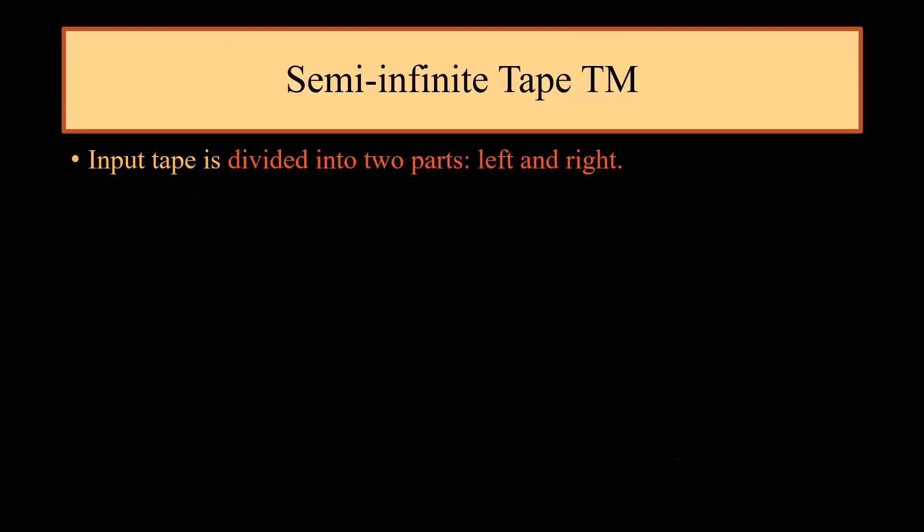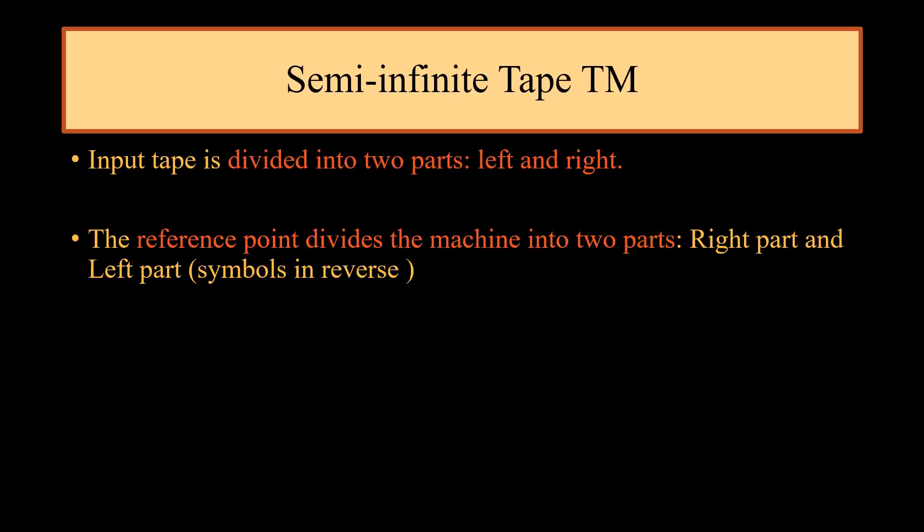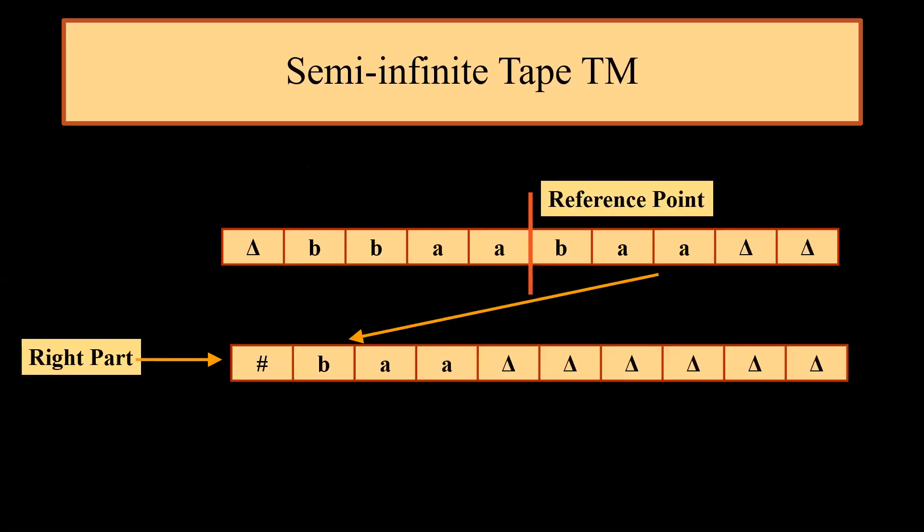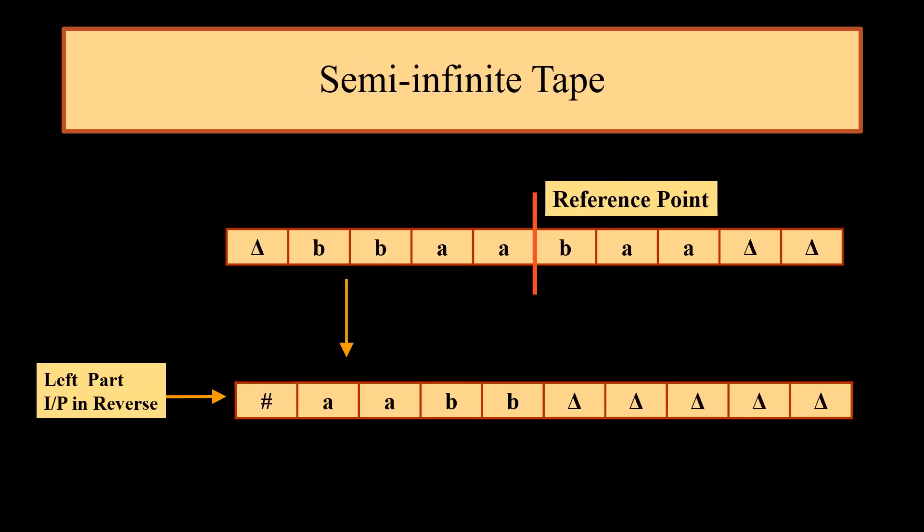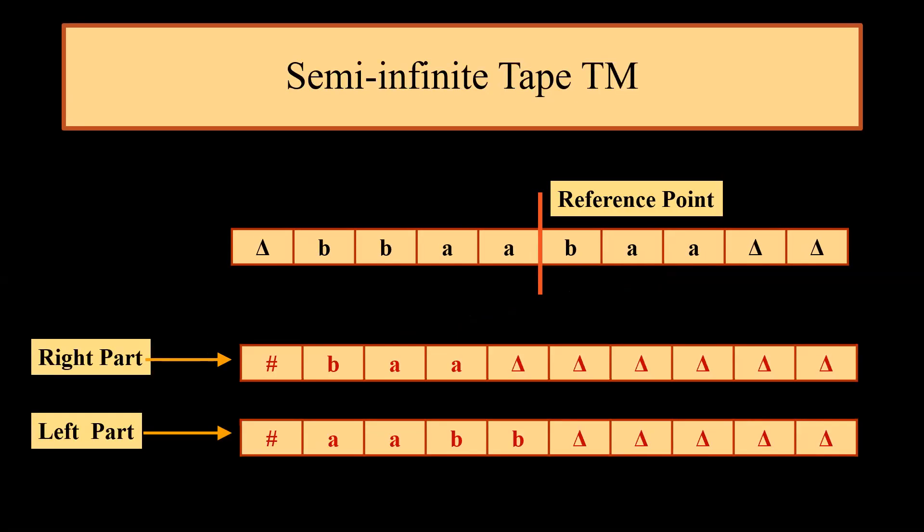Next we move to semi-infinite tape Turing machine. In this case input tape is divided into two parts, left and right. There is a reference point and this reference point divides the machine into two parts, that is the right part. Please remember the left part of the machine will store the symbols in reverse order and no left move is allowed when read head is at left boundary. In this example we can see that the entire tape is divided into two parts. The right part is represented by B, A, A just right to the reference point and there's a hash which is the boundary indicator. If we talk about the left part, the input is placed on the tape in reverse order. That means initially we had delta B, B, A, A. Now when we are storing it on the left part we store as A, A, B, B. This is how we divide the semi-infinite tape into two parts.